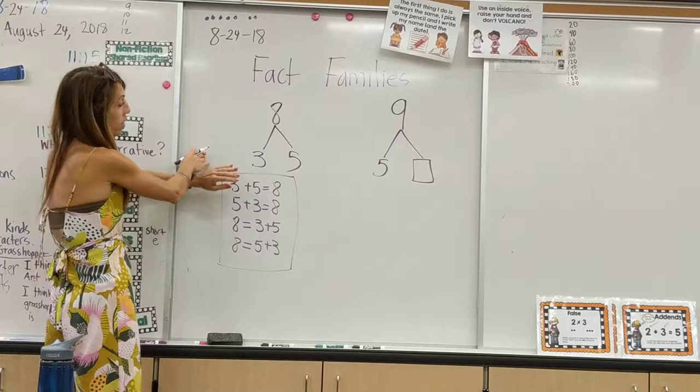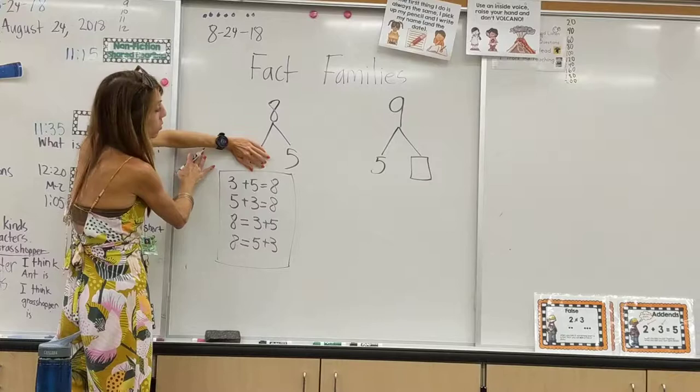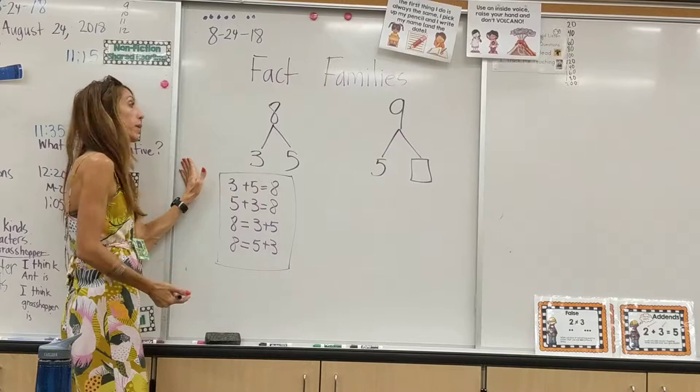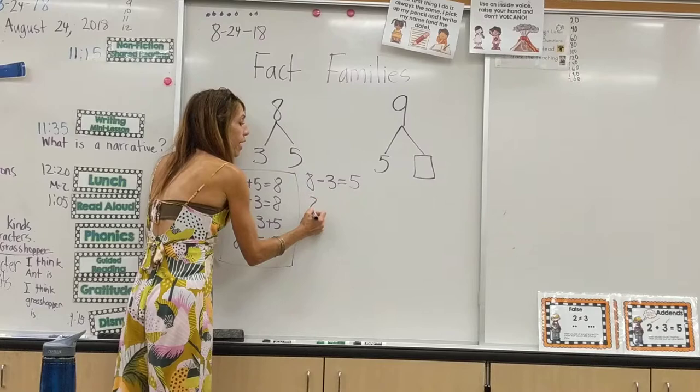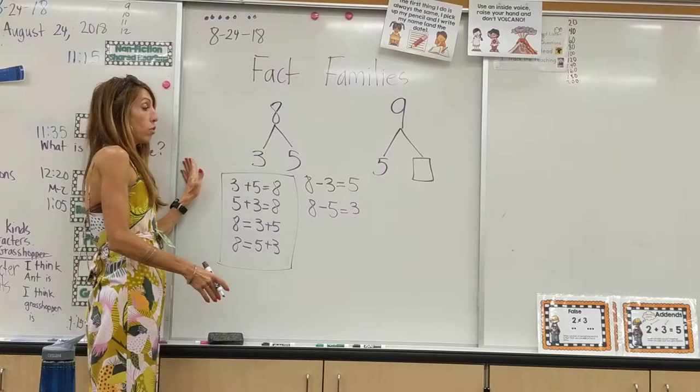For subtraction, another way that we have the kids look at it is if you have eight and you take away three, what's left? Well, five. Or if you have eight and you take away five, what's left? And how they write that is eight take away three equals five, and eight take away five equals three.